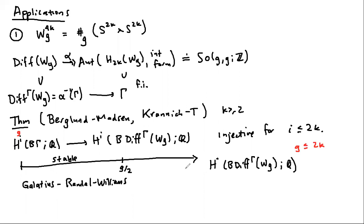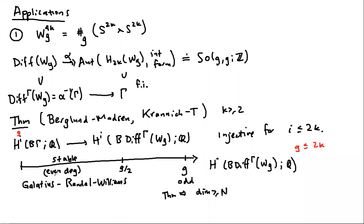The theorem gives you lots of non-trivial stuff in degree g, at least when g is odd, for certain values of gamma. Similar to before, all the stable classes have even degree, so these classes are not in the algebra generated by the stable classes.